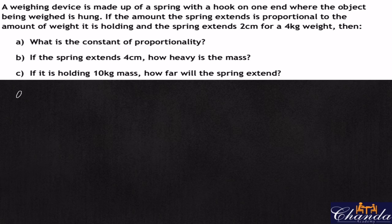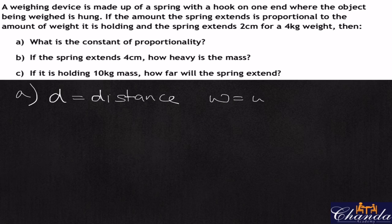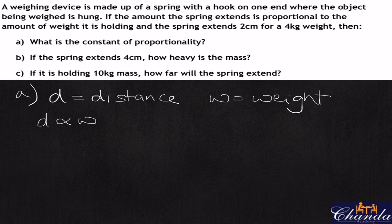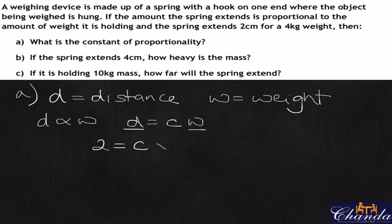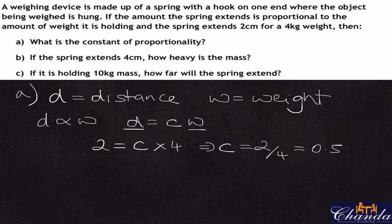Let's call the distance D and the weight W. The distance the spring extends is proportional to the weight, so D equals the constant of proportionality multiplied by W. We're told the distance is 2 centimeters when the weight is 4, so two equals C times four. Therefore C equals two over four, which gives us 0.5. So the constant of proportionality is 0.5.